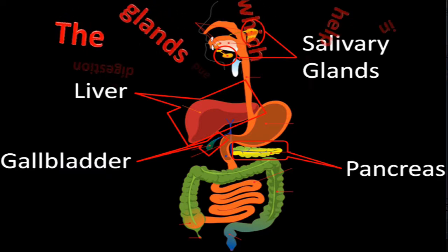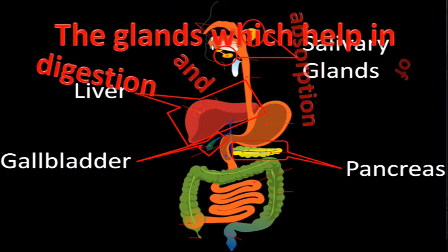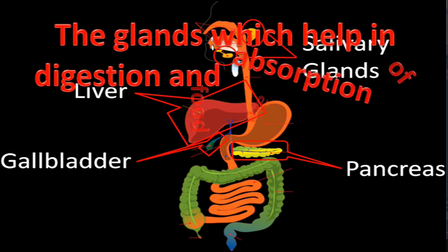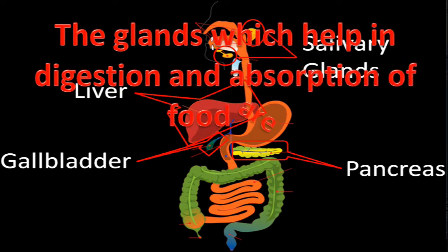The digestive system contains various glands that secrete enzymes for digestion and absorption. In the mouth, salivary glands are present. Near the small intestine, the liver, gallbladder, and pancreas secrete various enzymes and help in digestion and absorption of food.